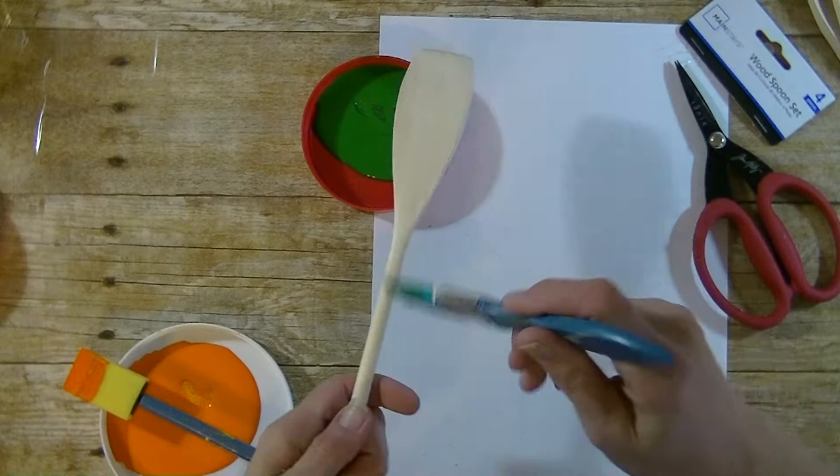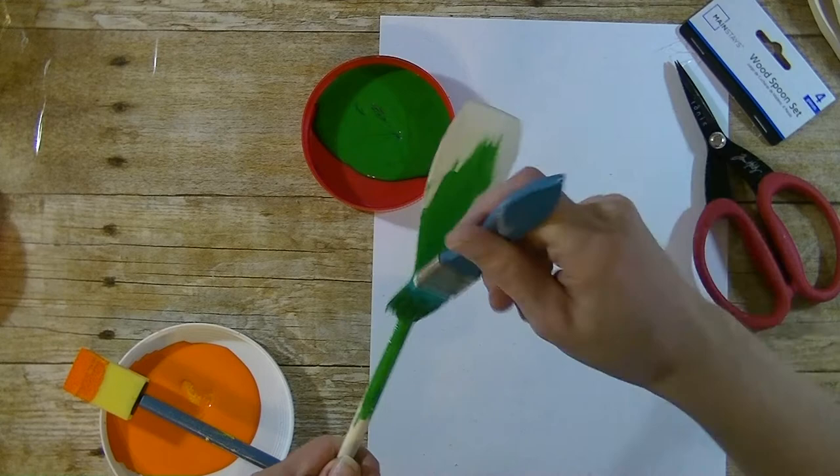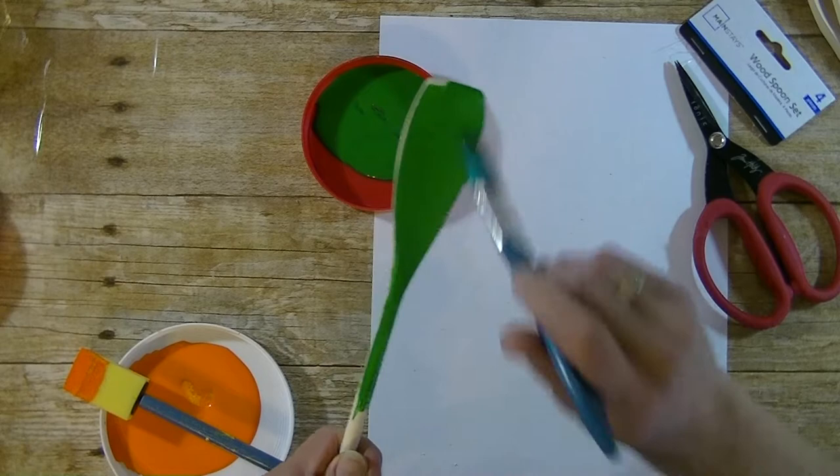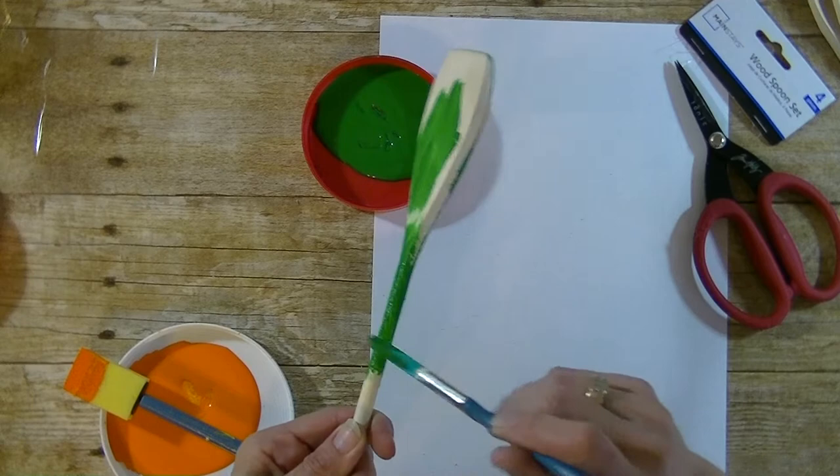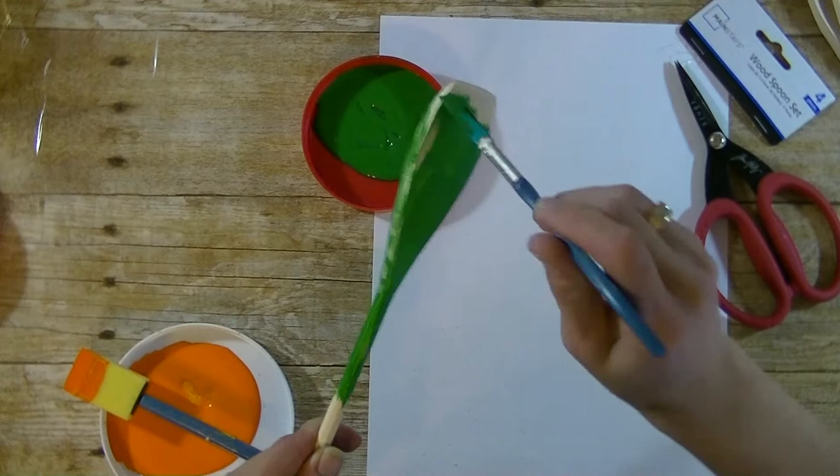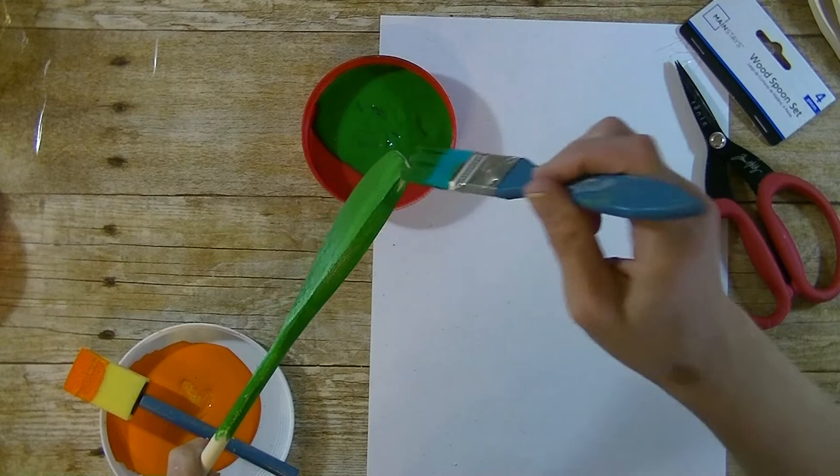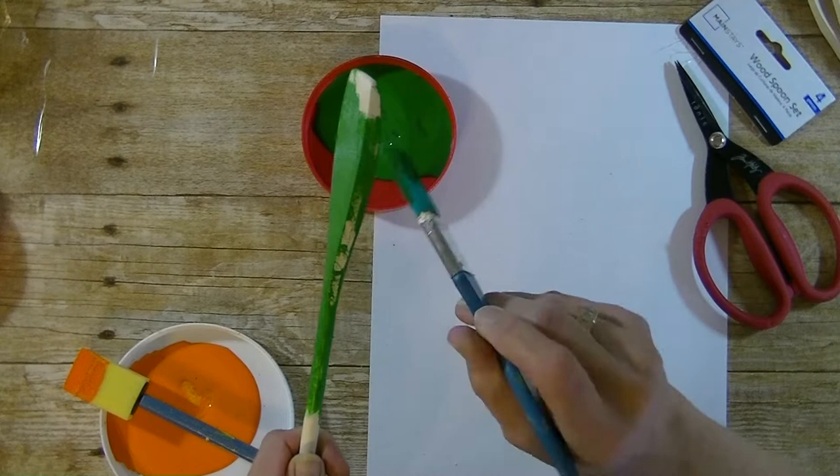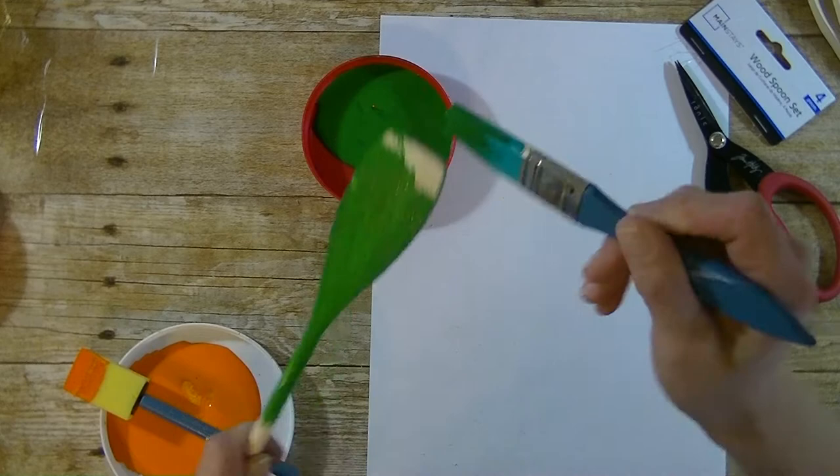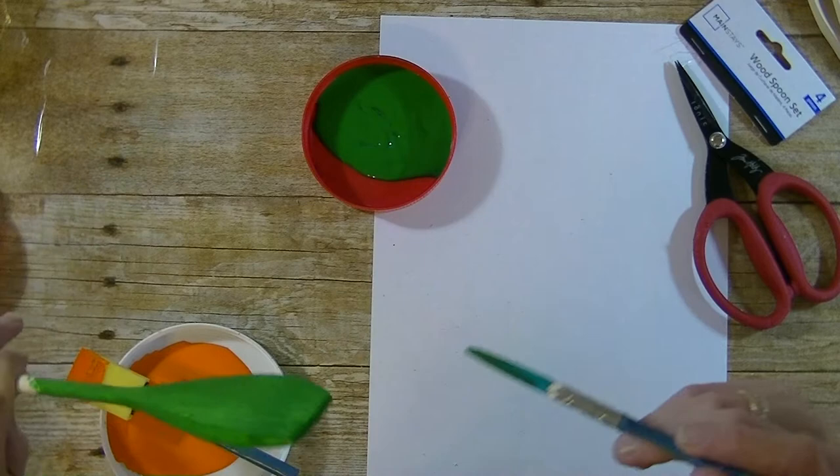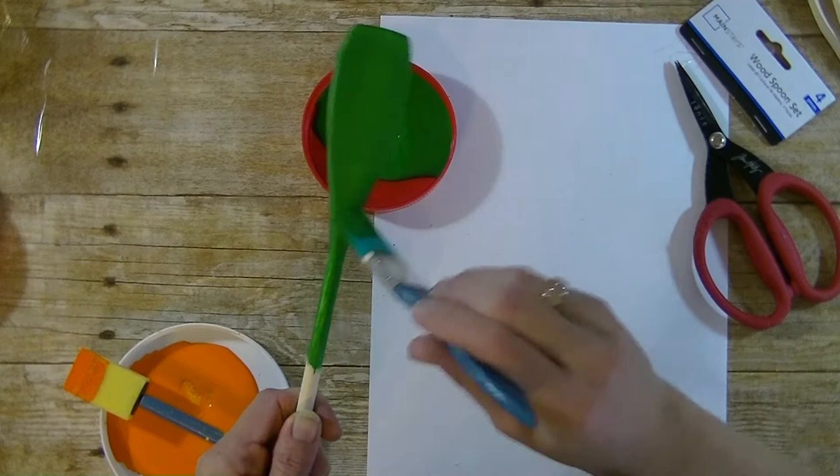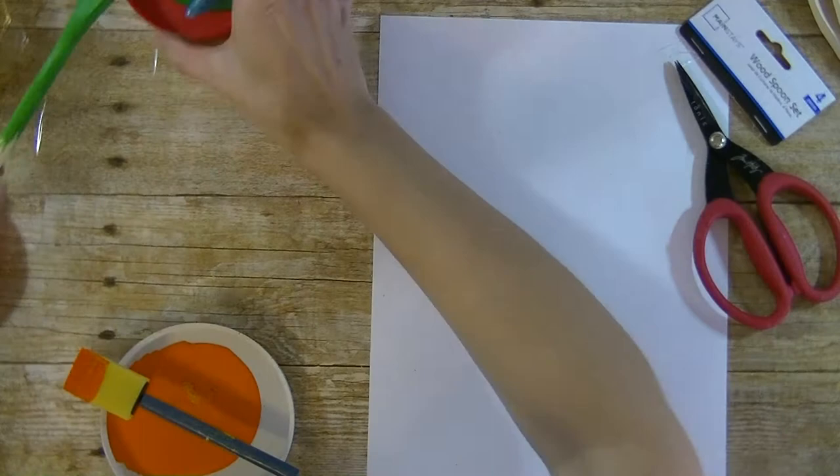I am going to paint them all the way down. You want to do a really thin coat. It is wood so it does absorb the paint pretty quickly, but I still like doing a real thin coat. This way it dries extra fast. I am going to do both sides. Really fun for the kids to get involved with this one. Make sure you get the sides as well.